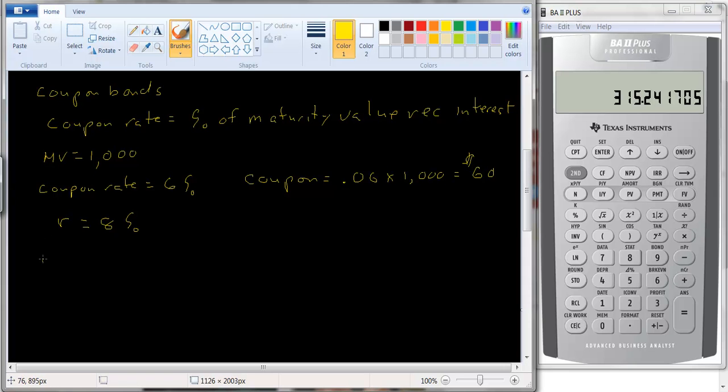All right, so we just have a present value equation here. Price of the bond equals $60 times... I'm sorry, I didn't tell us how long until the bond matures. Let's say the bond matures in 5 years. So it would be 60 divided by 1.08, plus 60 divided by 1.08 squared, all the way out to year 5, 1.08 to the 5th power. Plus you get back the maturity value of 1,000, and that's also going to be discounted by 1.08 to the 5th power.